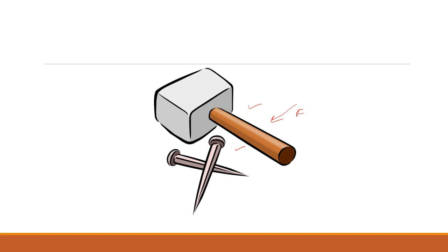Area told Force that if you apply force F and try to insert the nail into a wall with the wider end, what will happen? Here the area is more — that is A1. And if you try to insert from the pointed end, the area is less — that is A2. A1 is more than A2. So from which side is it easier to insert the nail into the wall?